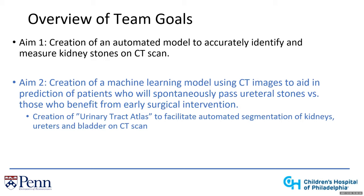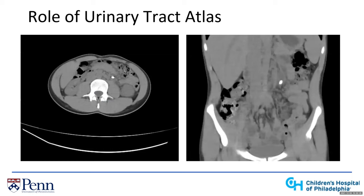These CT scans nicely illustrate the role of the urinary tract atlas. Here you can see a mid-ureteral stone on the left side on both the axial and coronal cuts. The stone is readily apparent but the ureter itself is very hard to trace — you can't really see the course of the urinary tract, and if we can't see it, neither can the computer. Since non-contrast CTs are the most utilized imaging type for diagnosing kidney stones, we need to overcome this difficulty in visualizing the urinary tract to create a model able to predict ureteral stone passage.